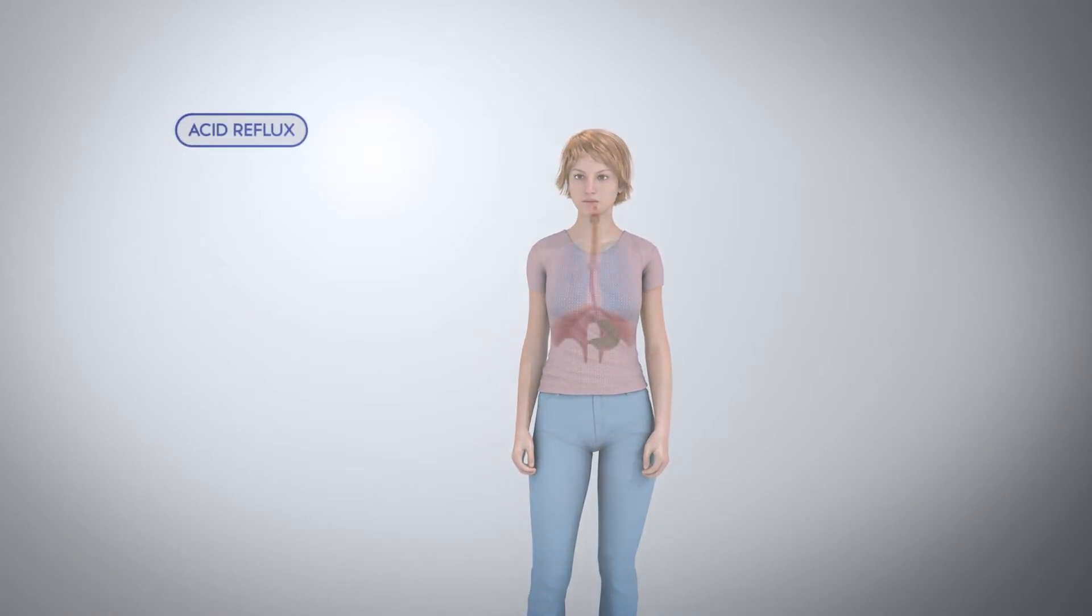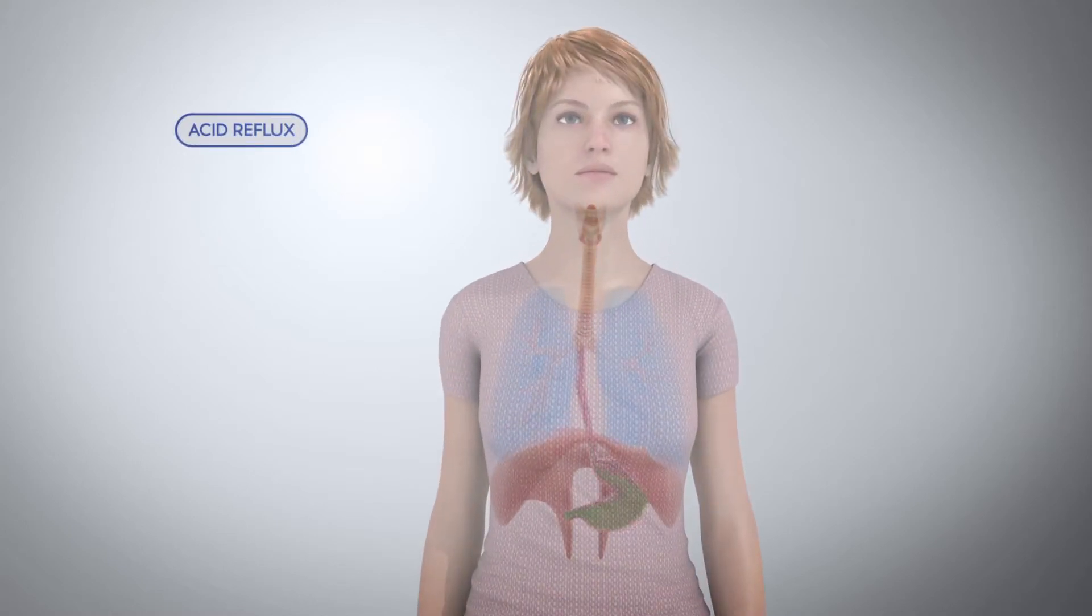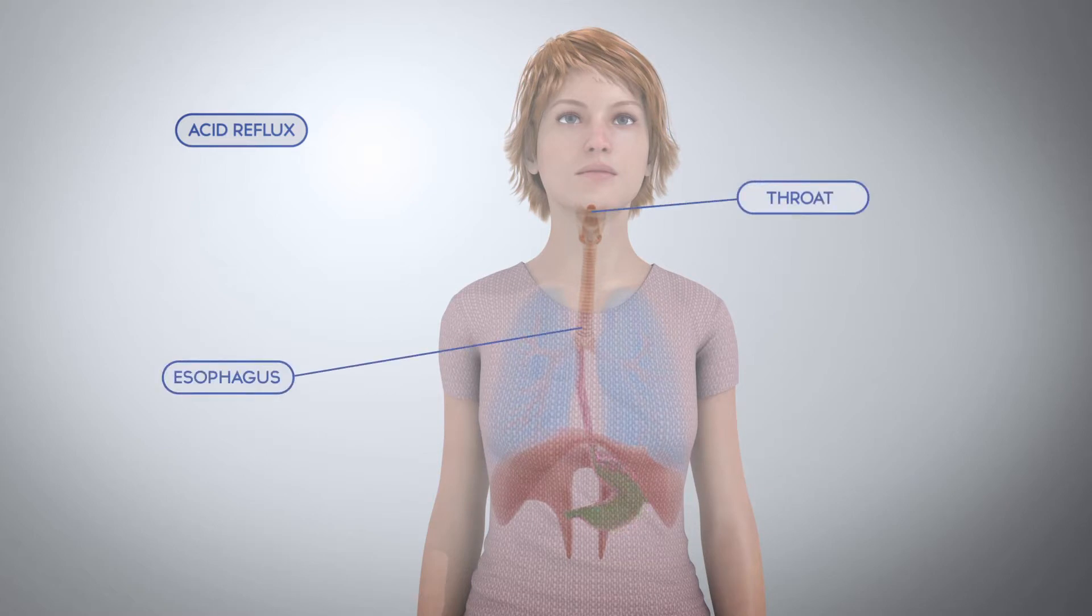Millions of people suffer from acid reflux. One type gives you heartburn and that tightness in your chest. The other type of acid reflux continues up your esophagus and into your throat and lungs.